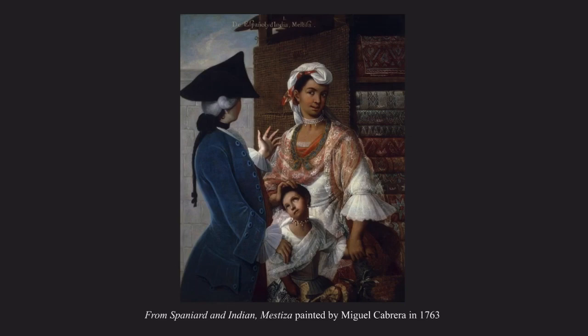The next painting we'll be viewing today is From Spaniard and Indian, Mestiza, painted by Miguel Cabrera. The iconography shown in the painting depicts a young girl with both of her parents. The father is Spaniard, which we know because of his attire as well as his skin color. The mother is Indian, which we know because of her skin color as well as her indigenous wardrobe.